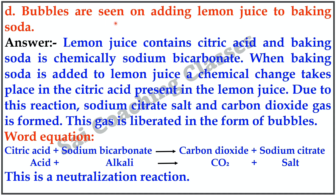D. Bubbles are seen on adding lemon juice to baking soda. Answer: Lemon juice contains citric acid and baking soda is chemically sodium bicarbonate. When baking soda is added to lemon juice, a chemical change takes place; citric acid reacts with sodium bicarbonate to produce sodium citrate salt and carbon dioxide gas, which is liberated in the form of bubbles. Word equation: Citric acid + Sodium bicarbonate → CO2 + Sodium citrate. This is a neutralization reaction.